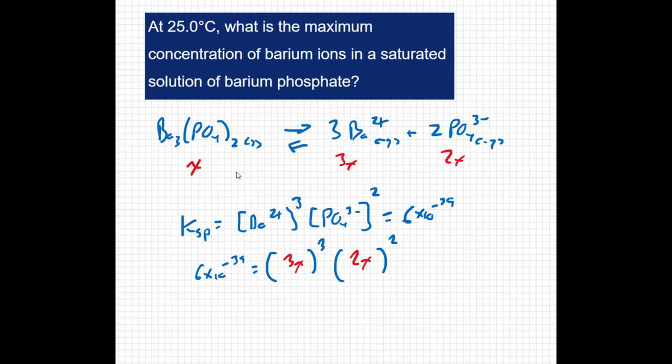But remember, we're doing two different things. We're doing stoichiometry, and we're doing equilibrium. So the 1 to 3 to 2 ratio comes from the stoichiometry, and the exponents come from the equilibrium. So now we have to simplify this.